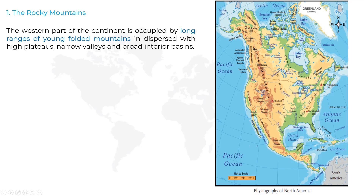What is a plateau? A plateau is an area of land higher than the normal ground level. What is a valley? A valley is a low area of land between hills or mountains. What is a basin? A basin is an area of land where precipitation collects and drains off into a common outlet. You can see these features in the western part of the mountains.